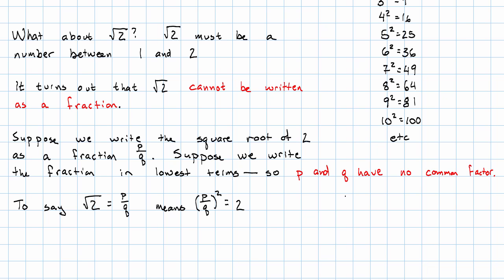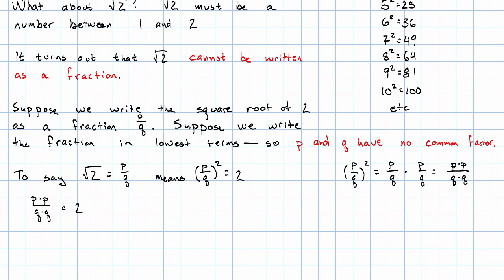What happens when I square p over q? What happens when I square a fraction? That'll be p over q times another copy of p over q. I multiply the numerators, that'll be p times p over the denominator, that'll be q times q. So p times p over q times q equals 2. I'm going to multiply both sides of this by q times q. And what I get then, the q's cancel out, p times p equals 2 times q times q.